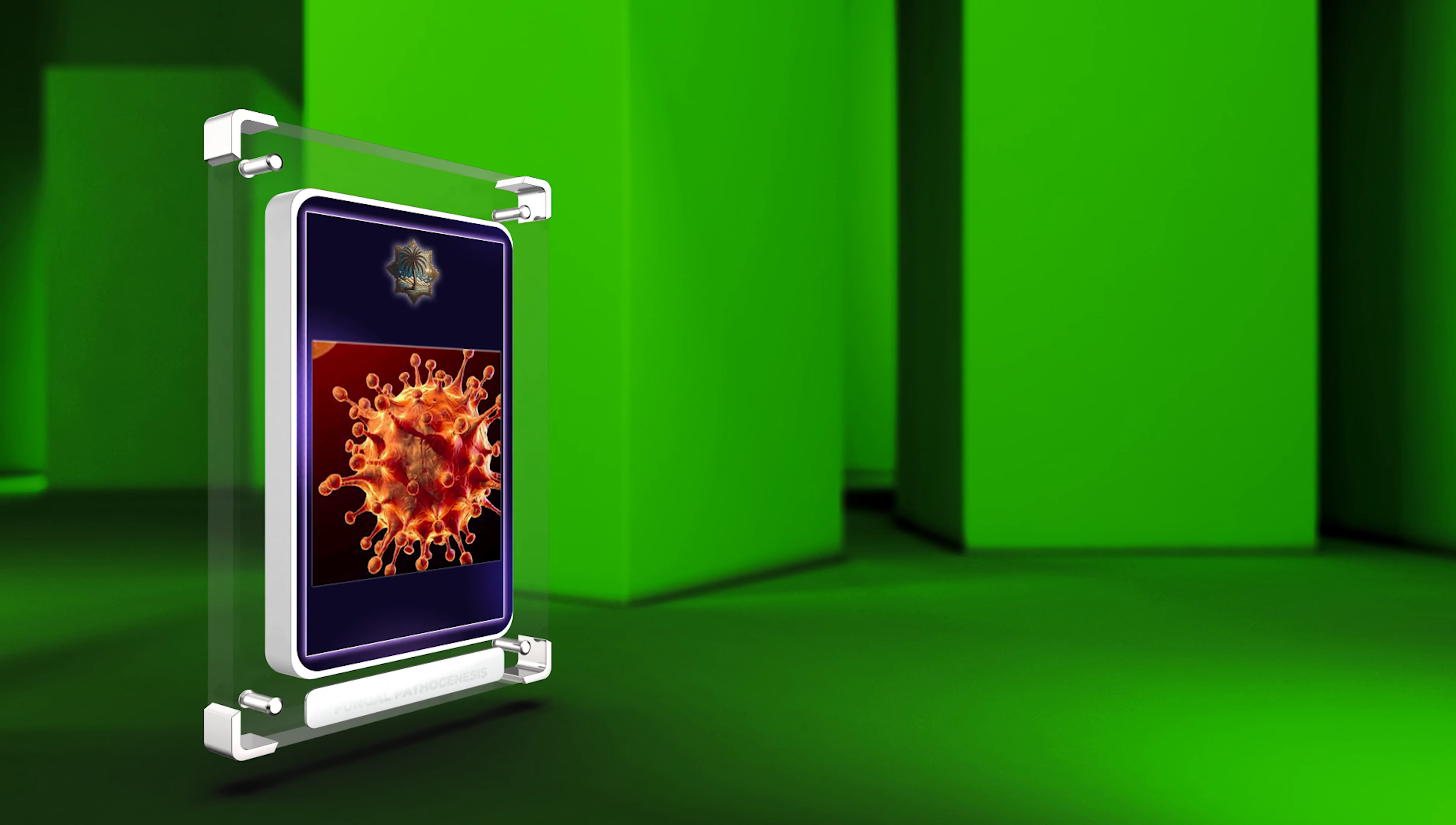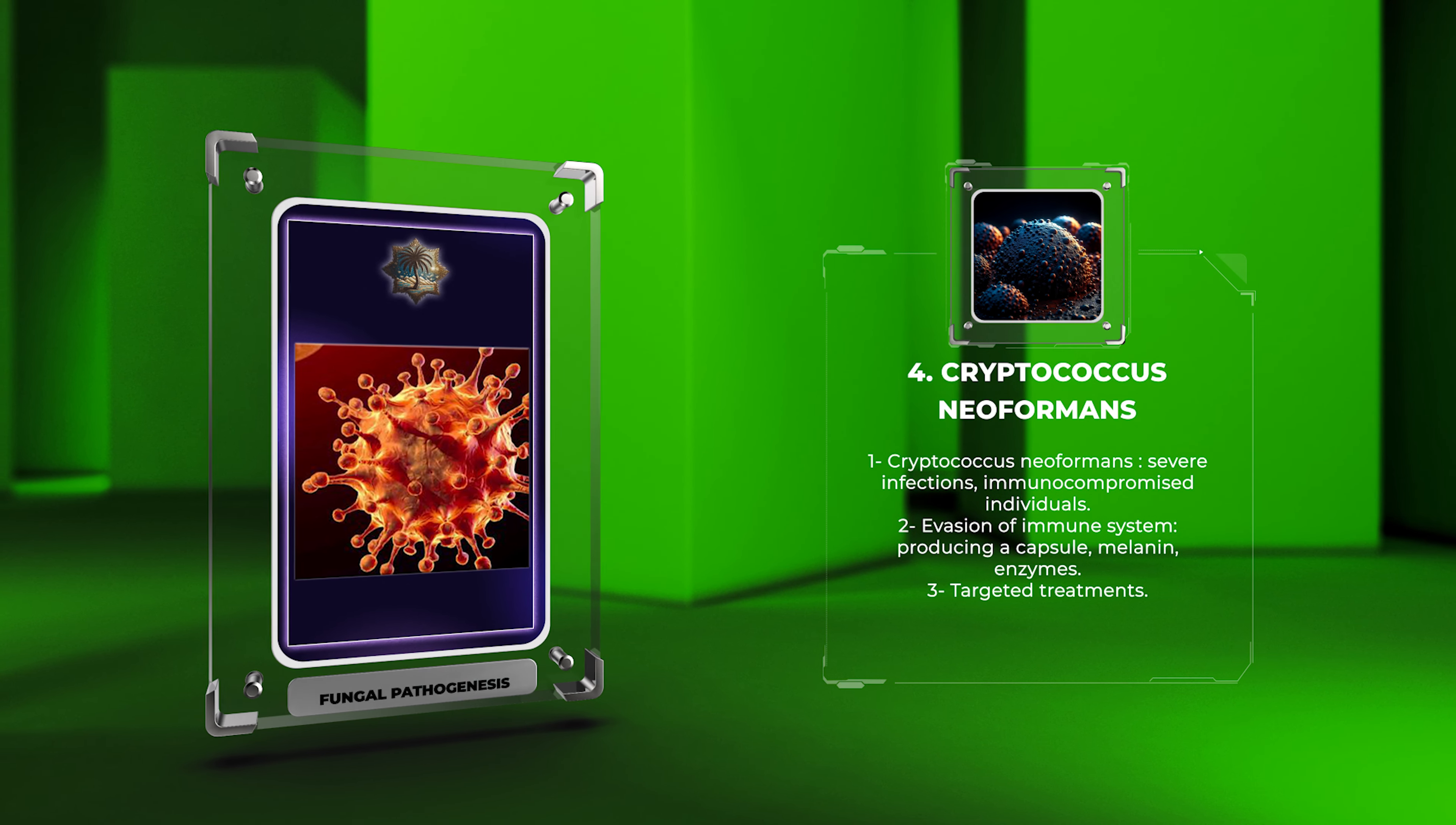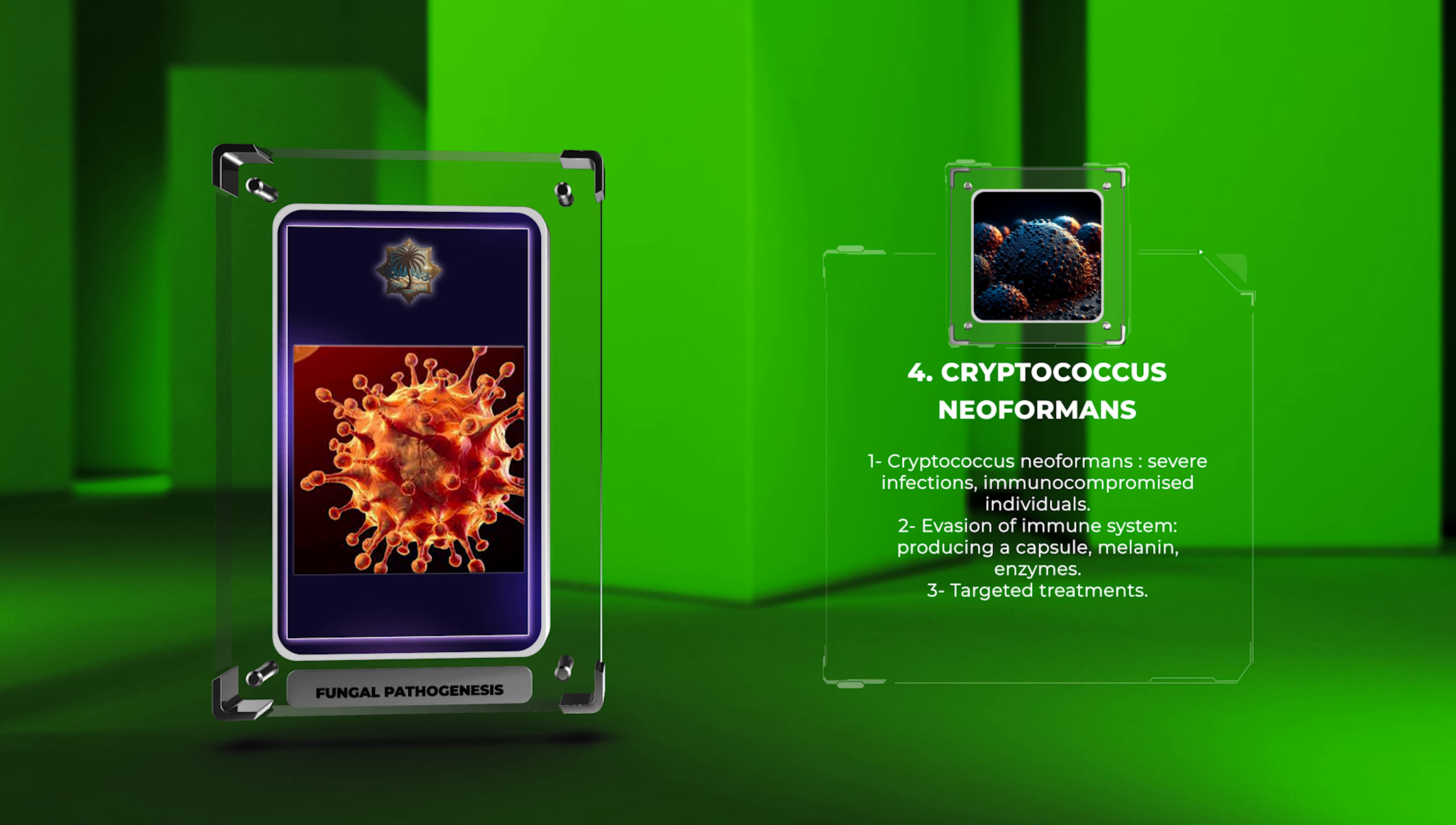Cryptococcus neoformans is a fungus that causes severe infections in immunocompromised individuals. It evades the immune system by producing a capsule, melanin, and enzymes. Understanding its virulence can lead to targeted treatments.